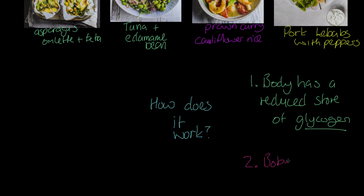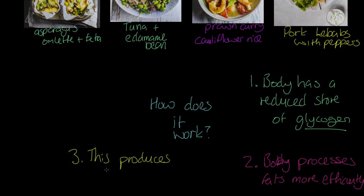Secondly, what that then means is that the body processes fats more efficiently. So, because we don't have any glycogen in our body or carbohydrates in our body, our body needs to get better at processing fats. We can also say lipids here. That means, there's a third state here. What this will do is this produces what are called ketones. This produces ketones and they're passed in urine. So, we literally wee out these ketones.